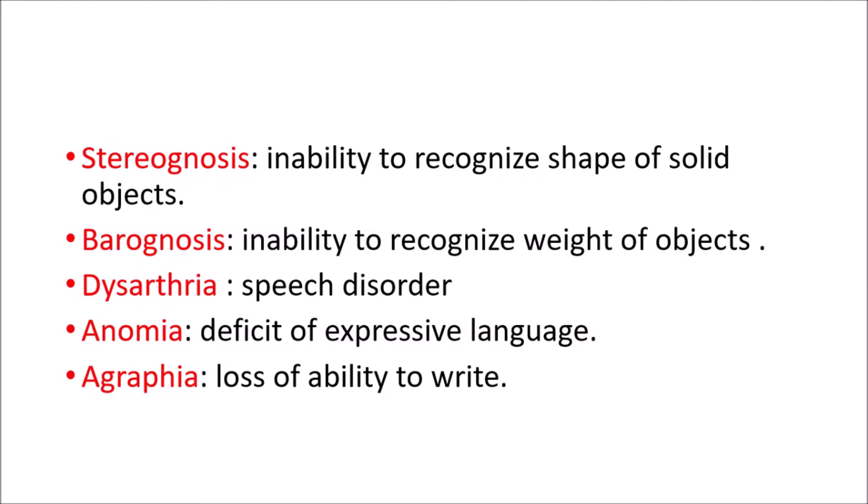Next is stereognosis — inability to recognize the shape of solid objects. A person with a stroke cannot recognize the shape of an object by touch. For example, if the eyes are closed and you give a mobile phone in the hand, the patient cannot recognize that it is a mobile or identify its shape — they cannot recognize the shape of a solid object.